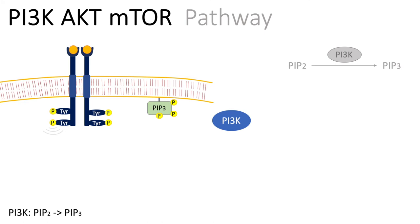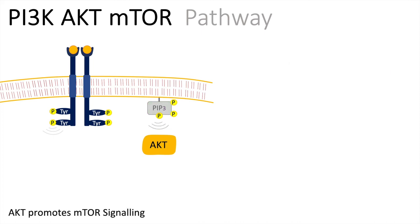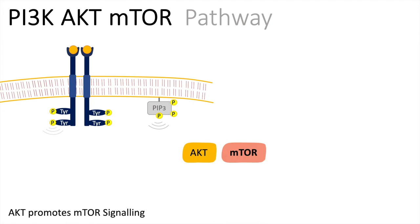The transformation of PIP2 to PIP3 activates PIP3, and PIP3 activates AKT. AKT can now initiate downstream effects and will activate mTOR. mTOR will upregulate translation, so the synthesis of proteins from mRNA.